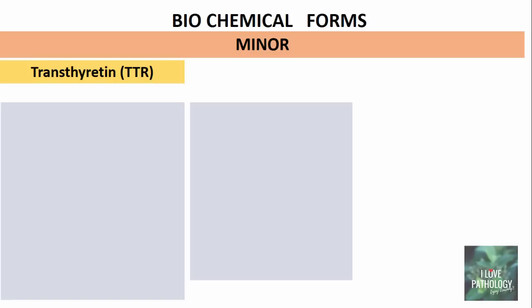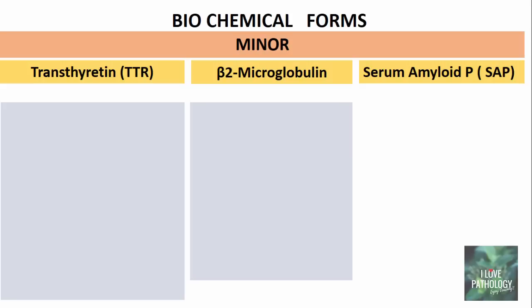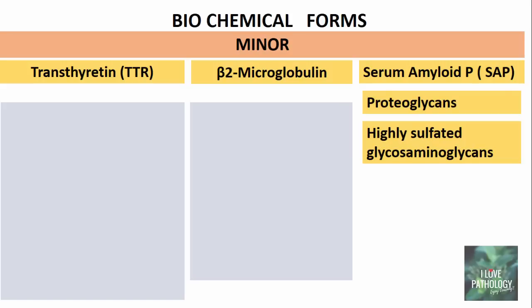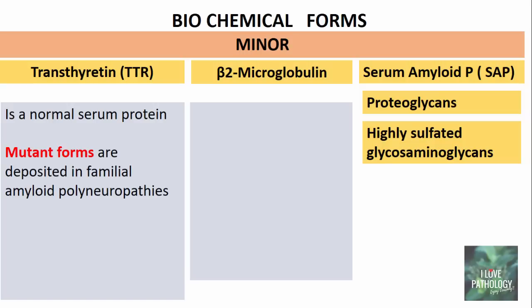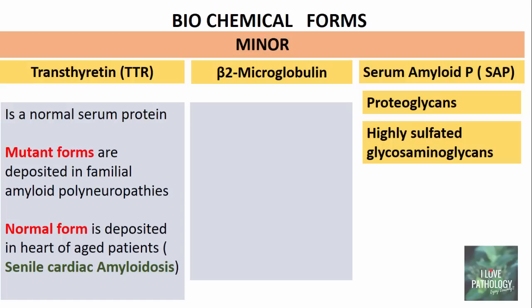Moving on to the minor forms, which include transthyretin, beta-2 microglobulin, serum amyloid P, proteoglycans, and highly sulfated glycosaminoglycans. Transthyretin is a normal serum transport protein. The name transthyretin is derived from the fact that it transports thyroxin and retinol. It is found in serum as well as in the CSF. There are two forms that can be deposited in tissues: the mutant form is deposited in familial amyloid polyneuropathies, whereas the normal form is deposited in the heart of aged patients — referred to as senile cardiac amyloidosis.